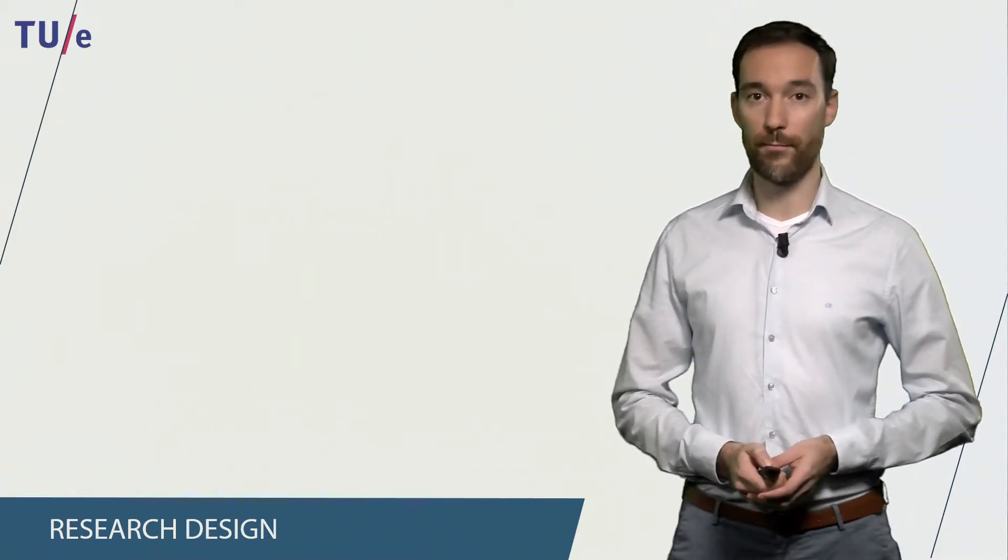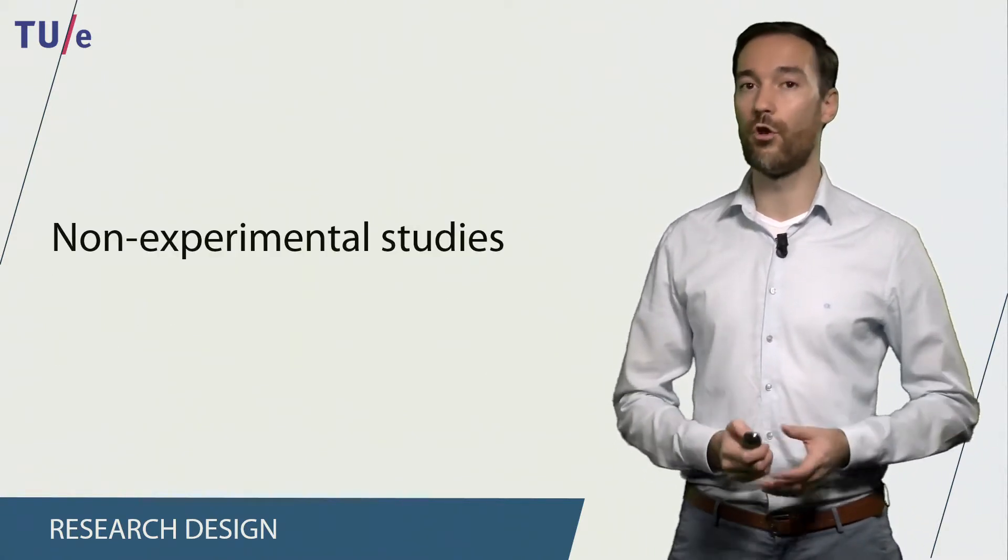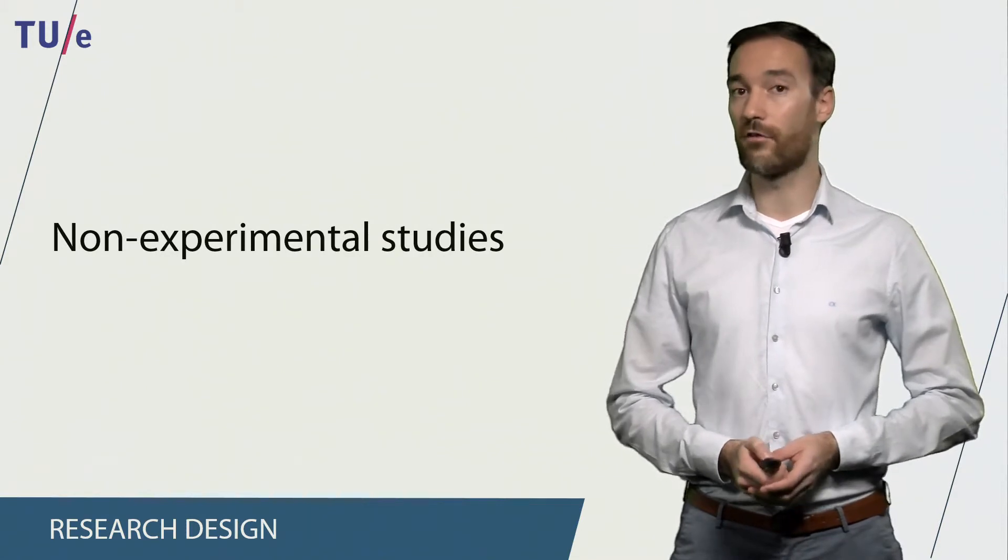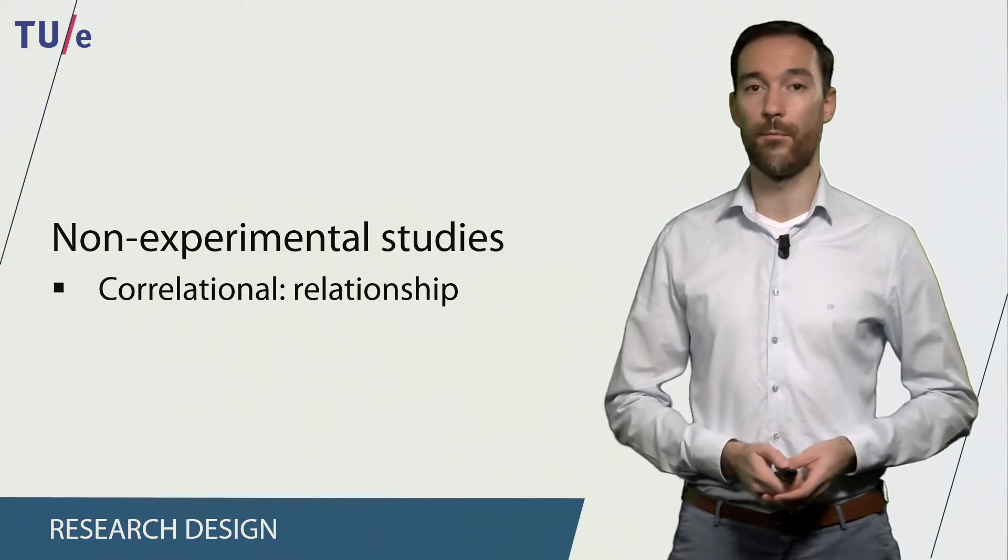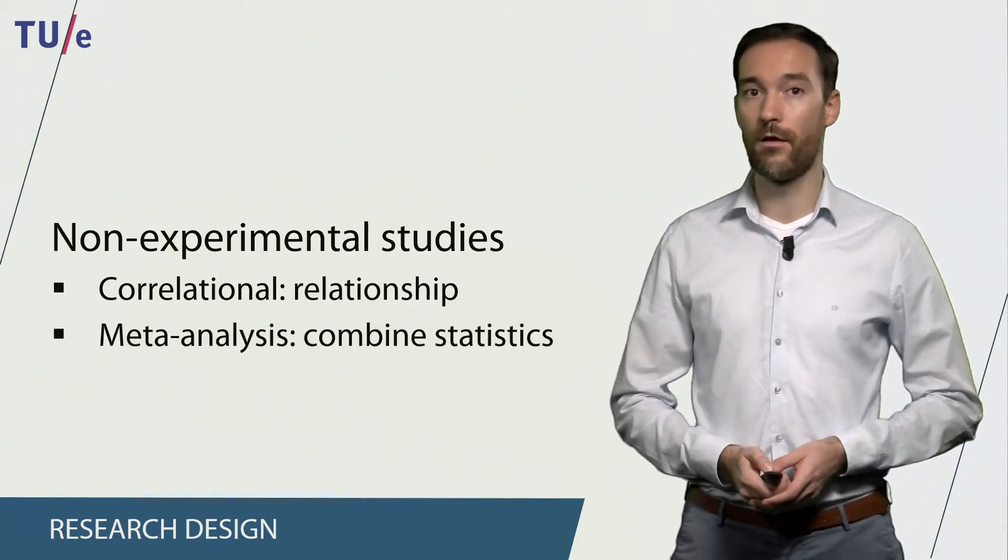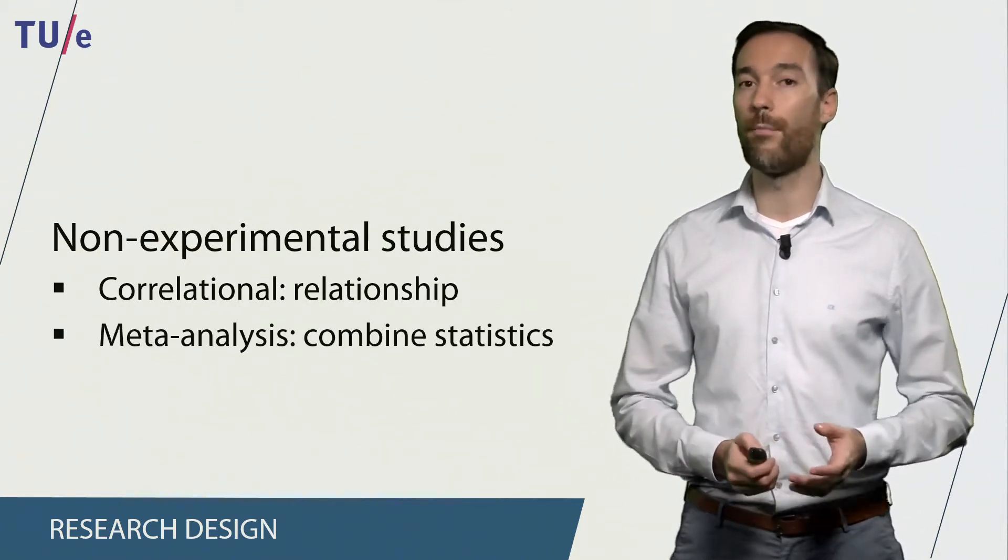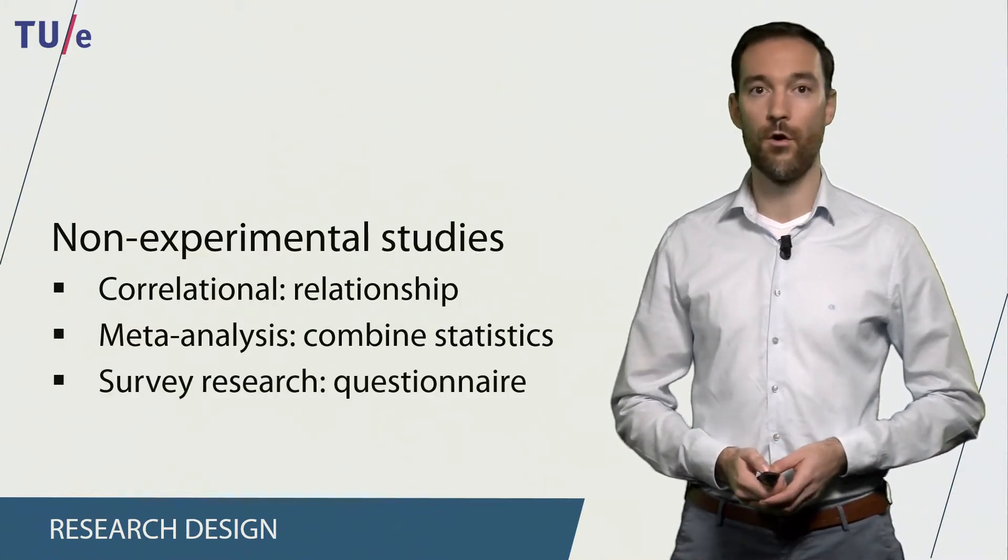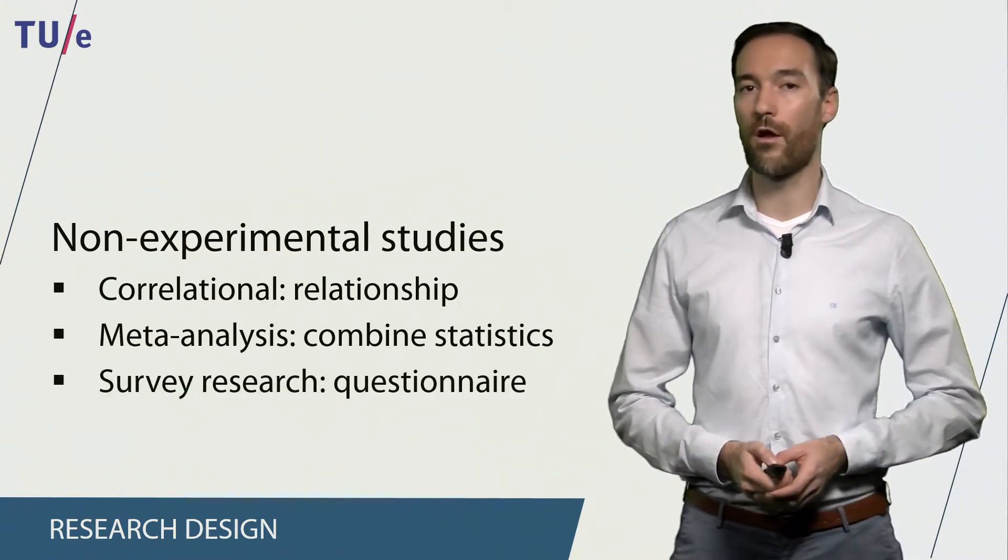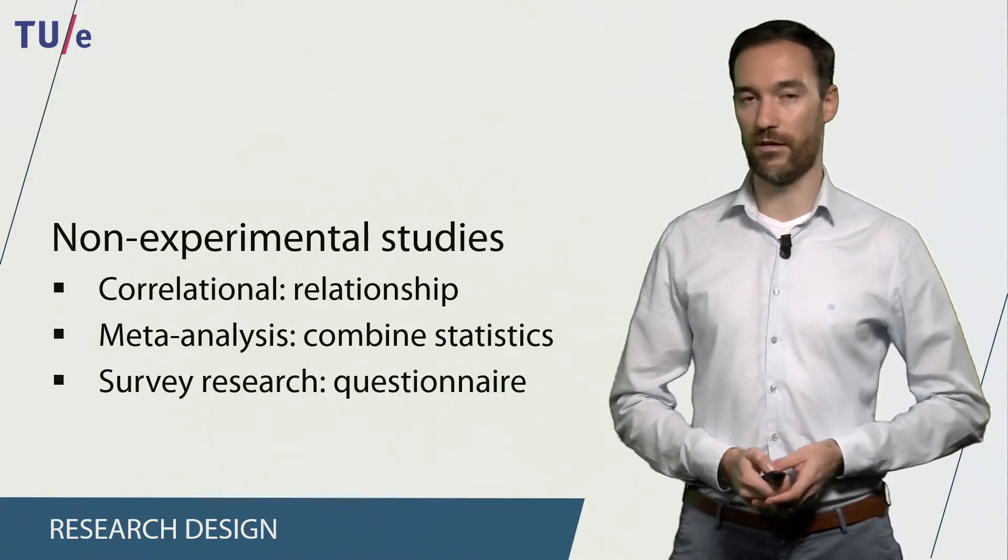In addition to experimental studies we also do non-experimental studies. Examples of these are correlational studies, in which we investigate a relationship between two or more variables; a meta-analysis, where we combine the statistics of published results on a specific concept; or survey research, where we ask people to fill in a questionnaire.